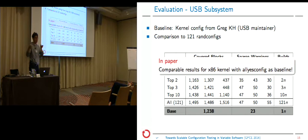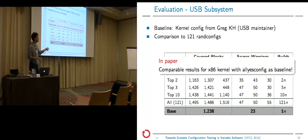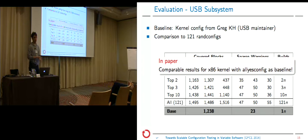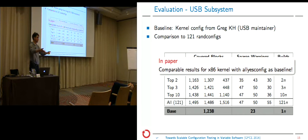We did the same evaluation on an entire X86 kernel — there's no time to cover all the data here, please refer to the paper for full details. Here we also compare against random configurations and 'all yes config,' a common way to test an entire kernel, assuming that enabling more options means finding more bugs and enabling the most code.